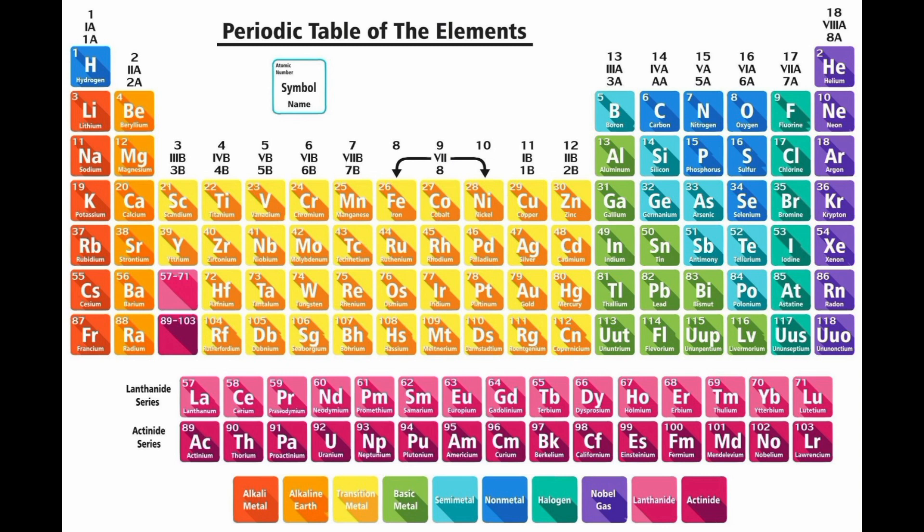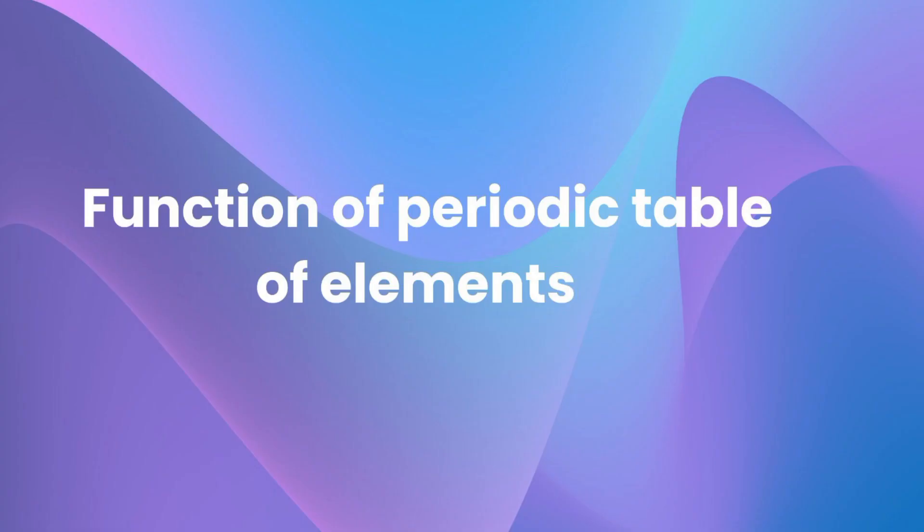Elements within the same group or family share similar chemical properties and electronic configurations, leading to their predictable chemical behavior. The term periodic refers to the repetition of these trends at regular intervals, which is a result of the recurring patterns in the electronic configurations of the elements. The periodicity of the properties of elements is one of the most fundamental principles of chemistry and forms the basis for the organization of the periodic table.